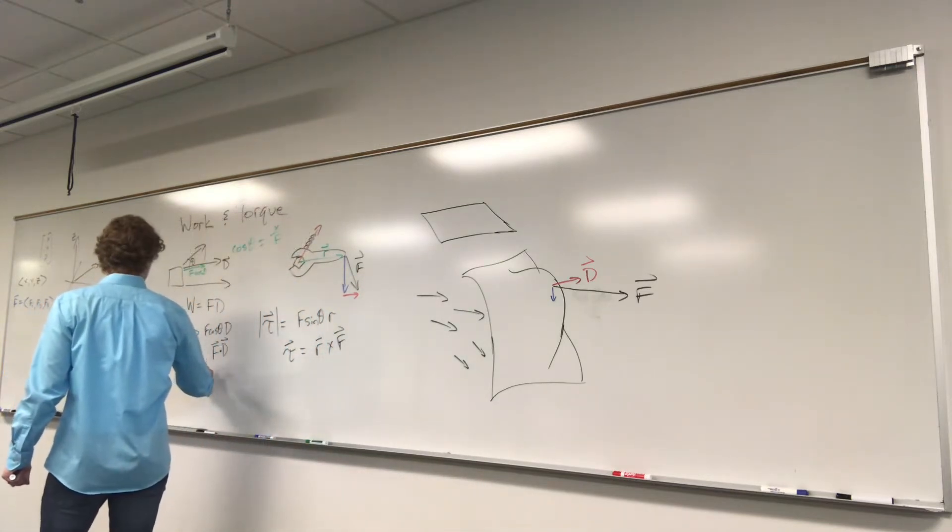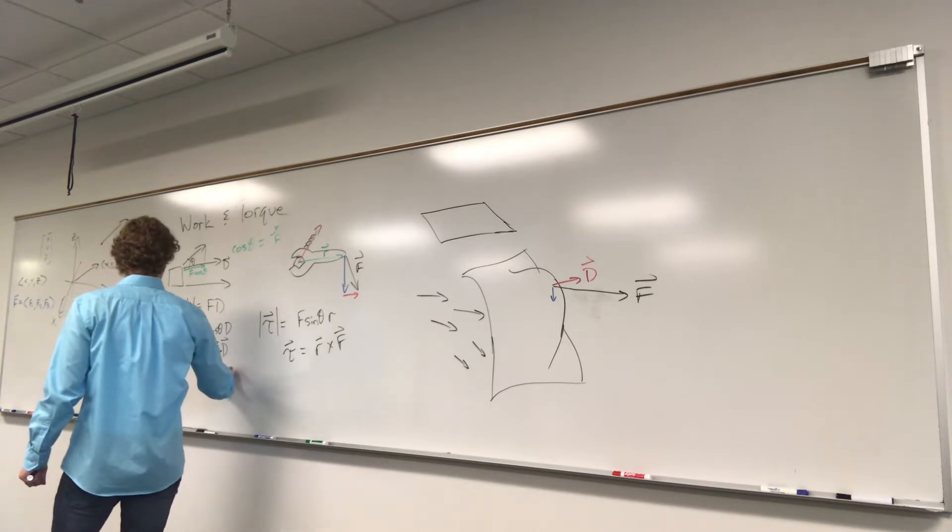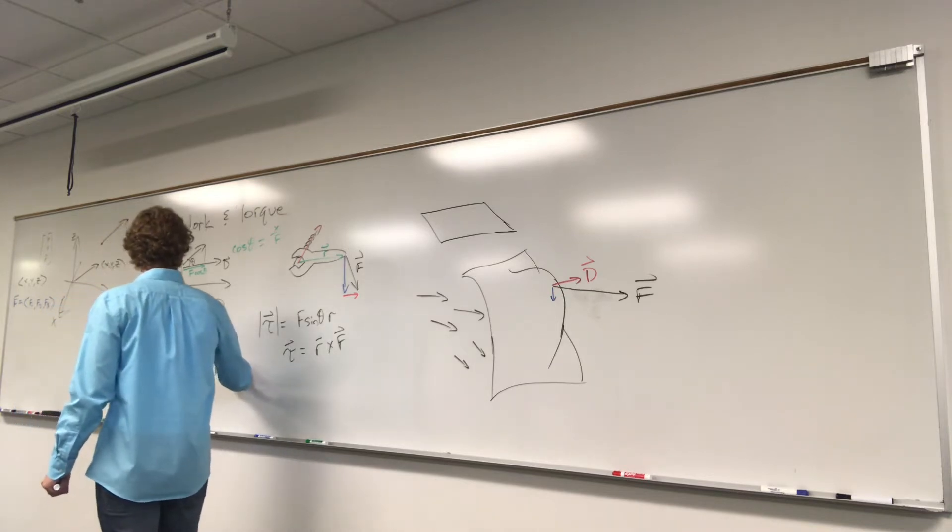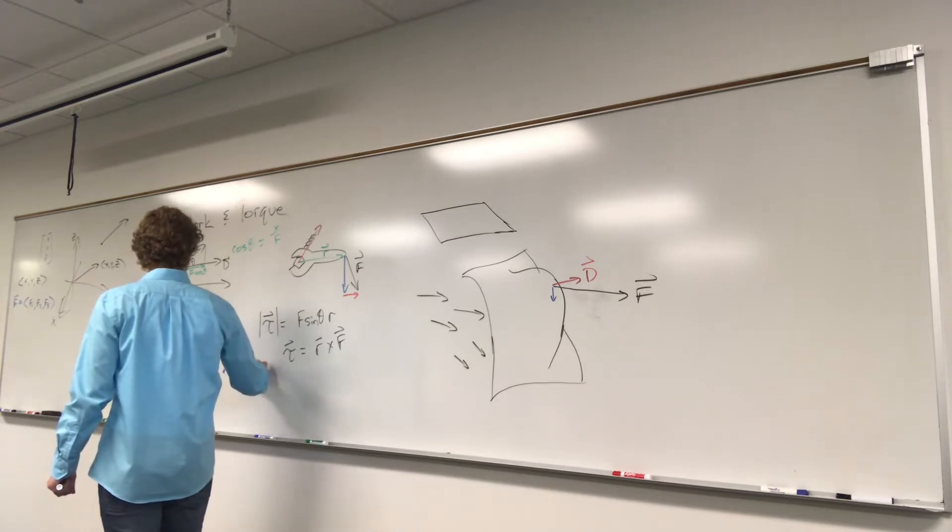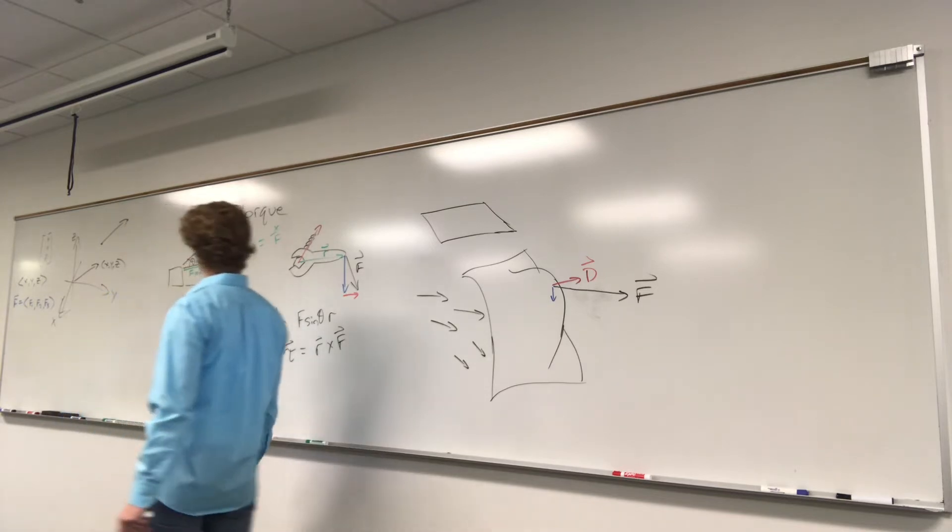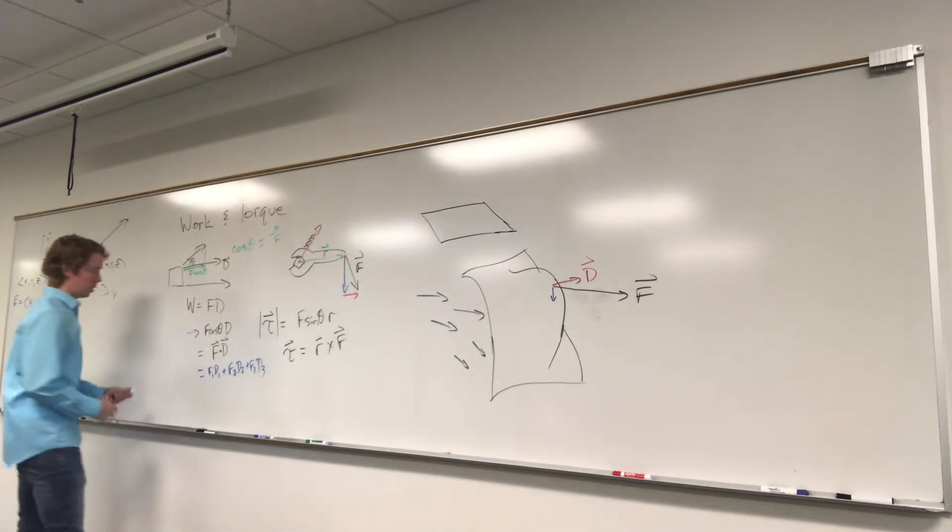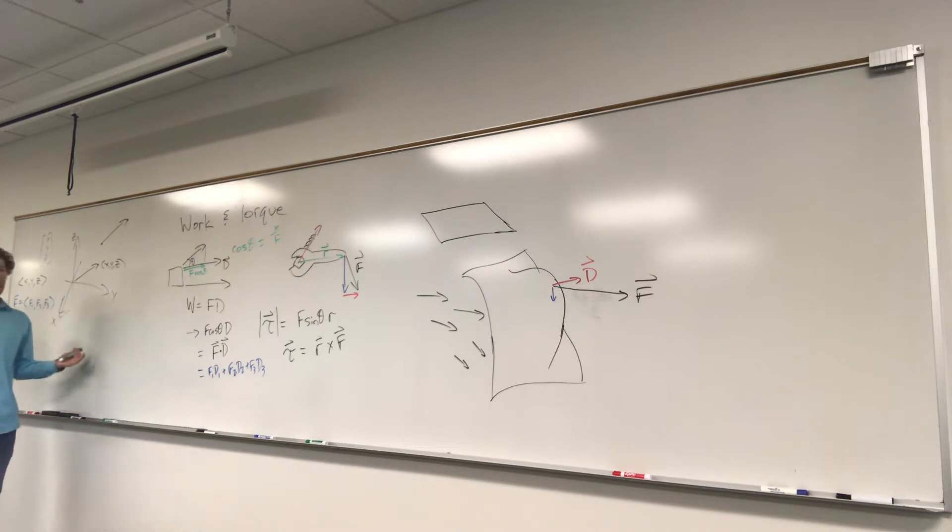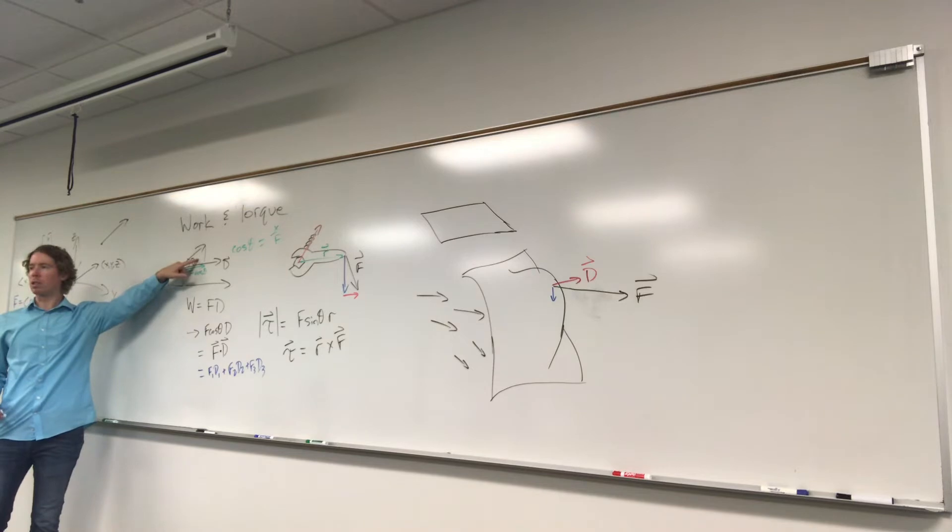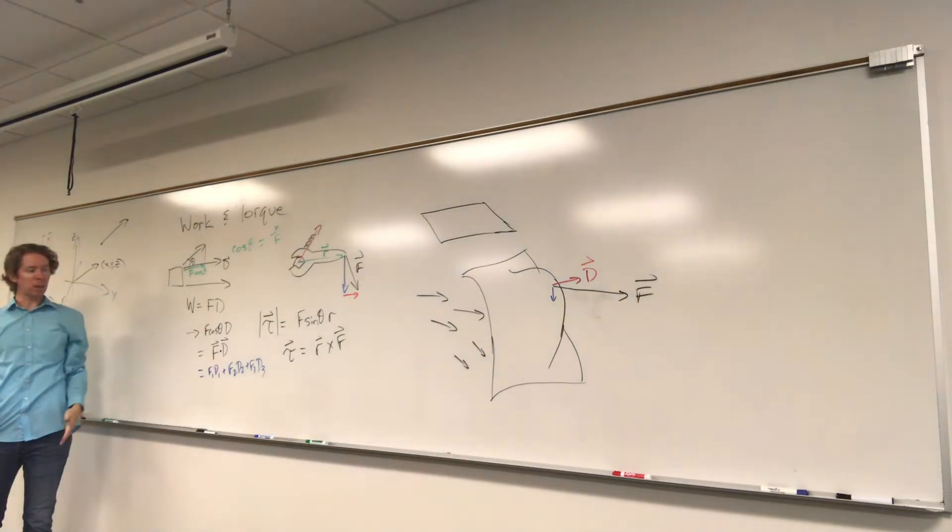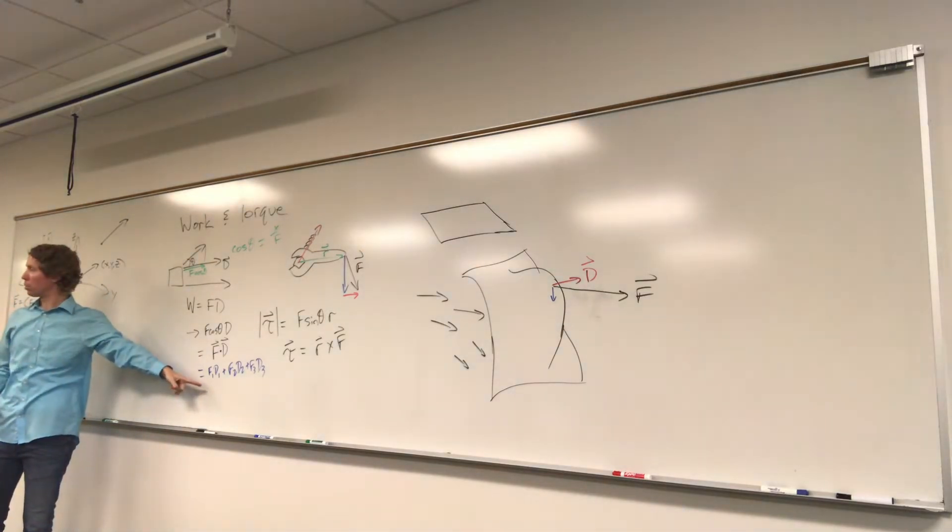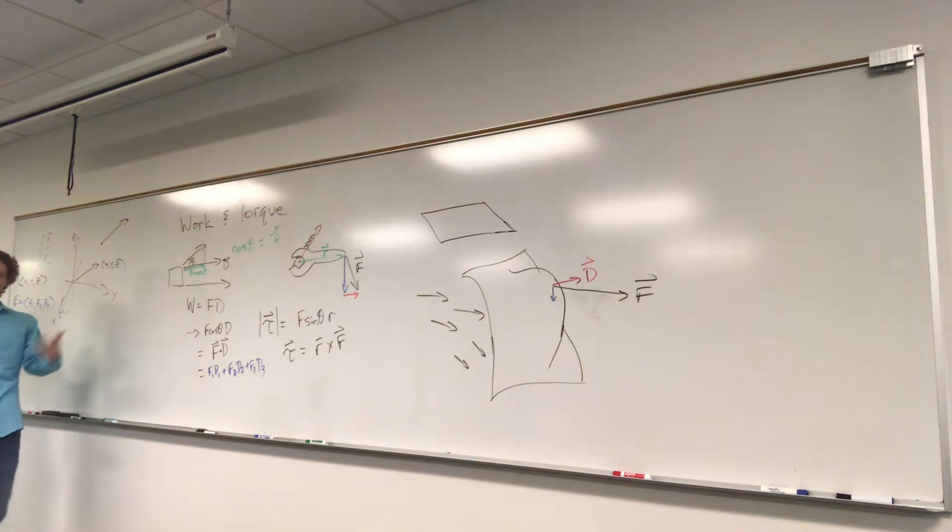So this would be, we could represent it as f1, d1 plus f2, d2 plus f3, d3. And one thing that's nice about this is that if I just hand you two vectors, a force vector and a displacement vector, and I ask you to calculate work, for example, you don't have to know what this angle is at all. As long as you know what the two vectors are, you just do a simple multiplication and adding them together. That tells you the work.